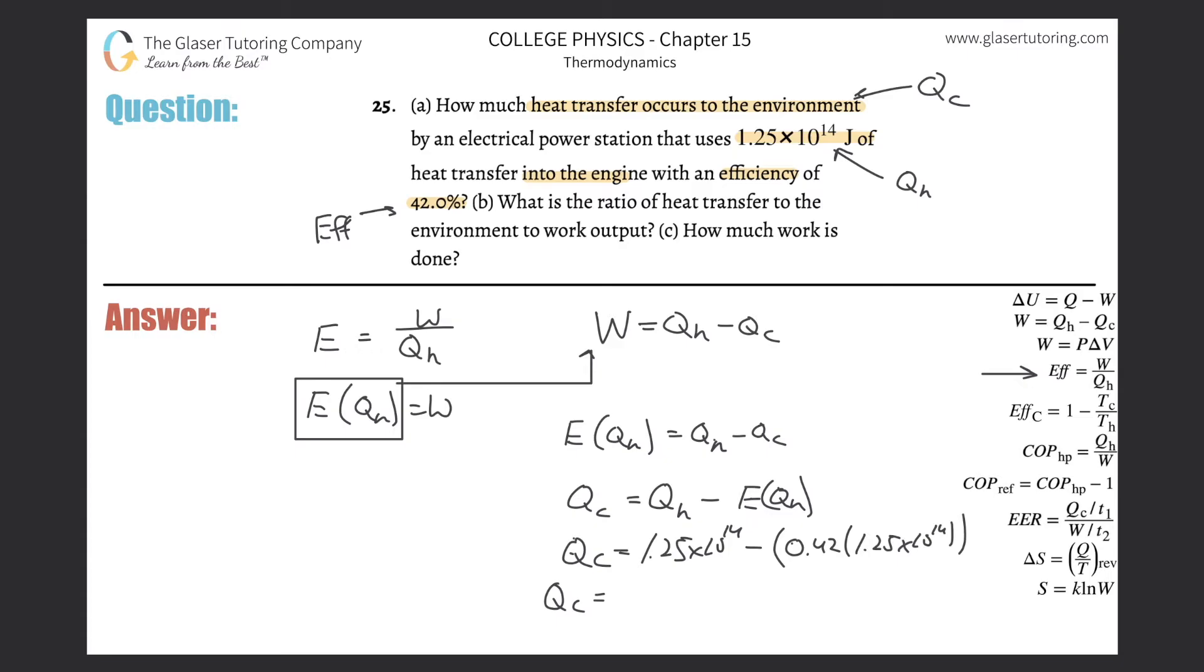1.25 times 10 to the 14th minus 0.42 times 1.25 times 10 to the 14th, and this is about 7.25 times 10 to the 13th. That is in terms of joules, that's the amount of heat loss to the environment. That is how we do letter a.